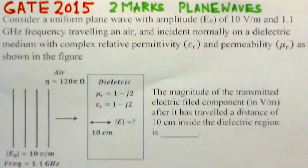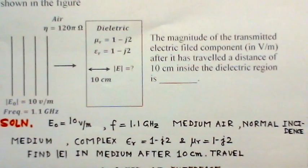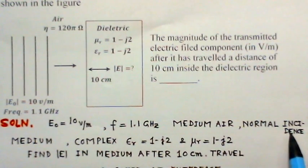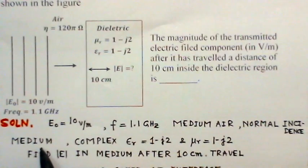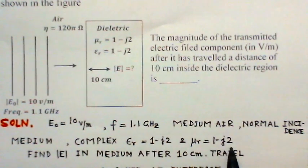Now we go to the solution of this problem. We observe that E0 is given to be 10 V/m and frequency is 1.1 GHz. The medium is a dielectric at normal incidence. We observe that the medium is complex — we have complex permittivity and complex permeability given — and we have to find the magnitude of the electric field in the medium after 10 centimeters of travel.